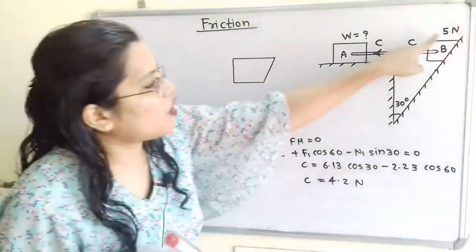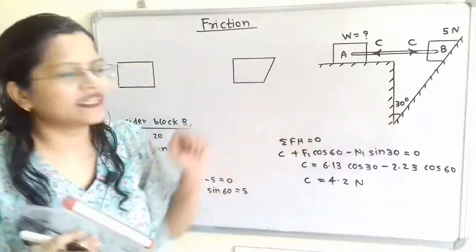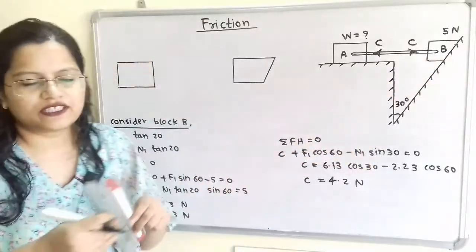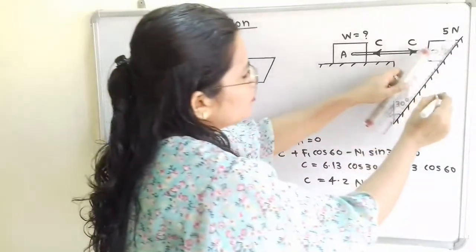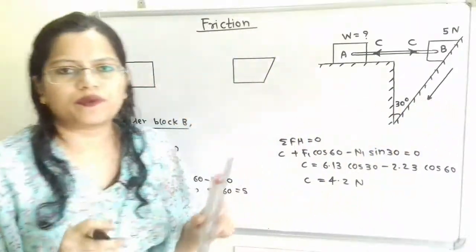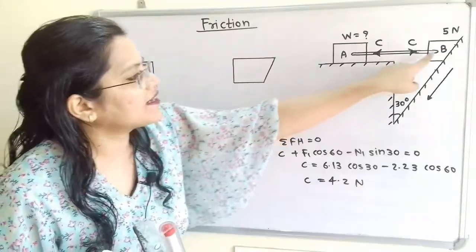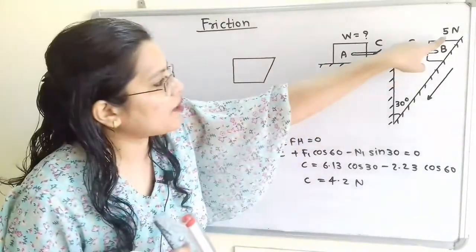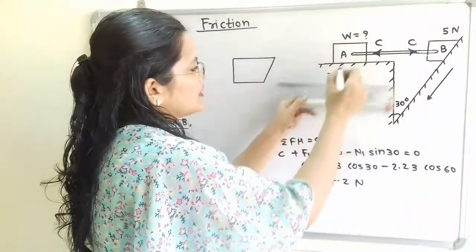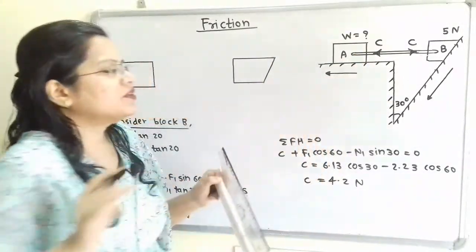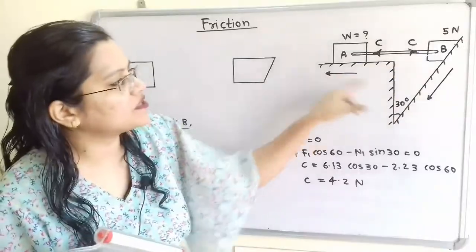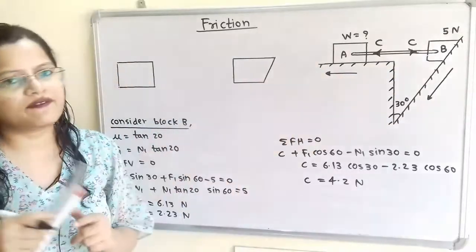Block B rests on the inclined plane, so it has a tendency to move in the downward direction. This is the direction of motion of block B. Since block B and A are connected with the rigid bar, as block B moves in the downward direction, block A will move towards the left hand side. We have to find out weight W so that the whole system will be in equilibrium.